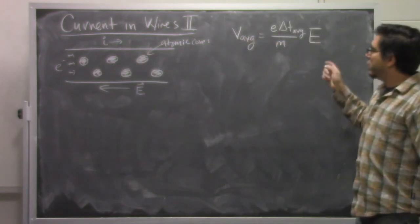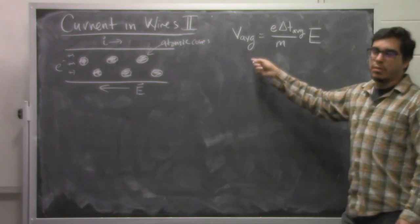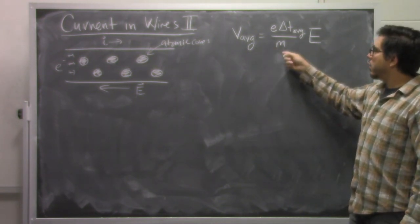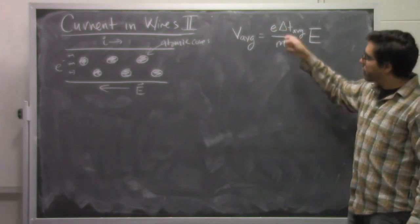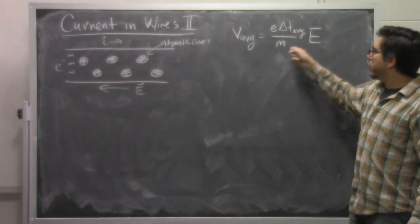In that video, we developed a mathematical model for the average velocity associated with those particles as they move along, which is related to the charge that they have, the average time between collisions, the mass of the particles, and the electric field.